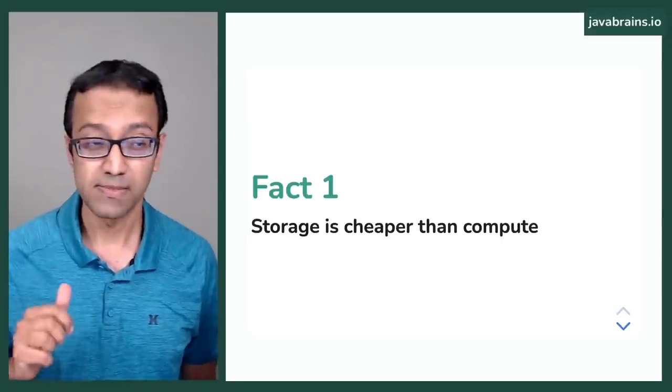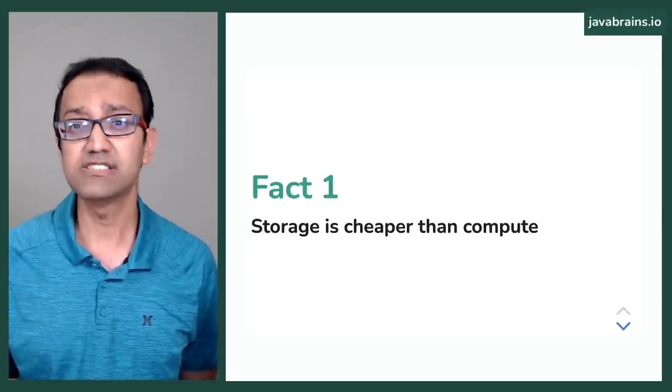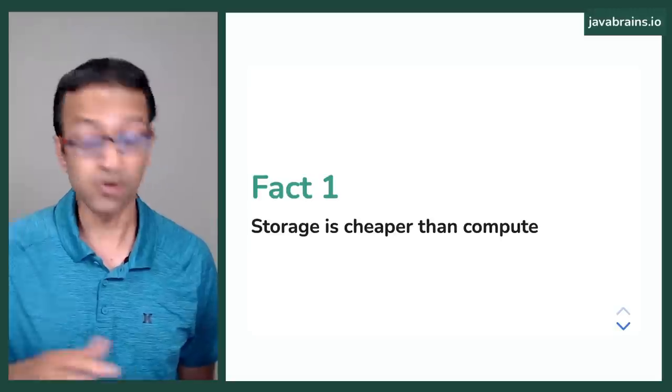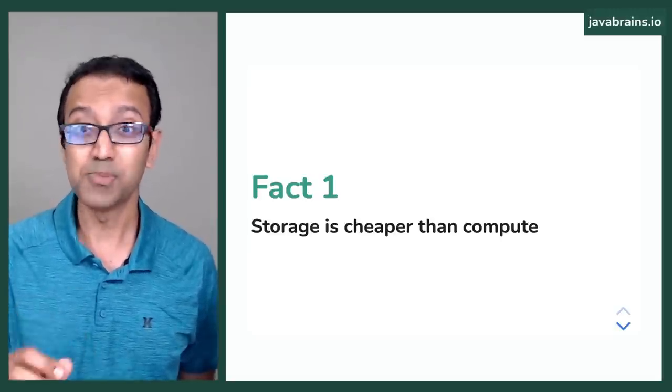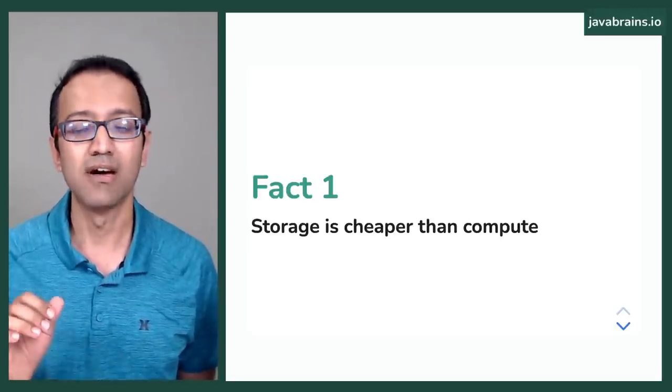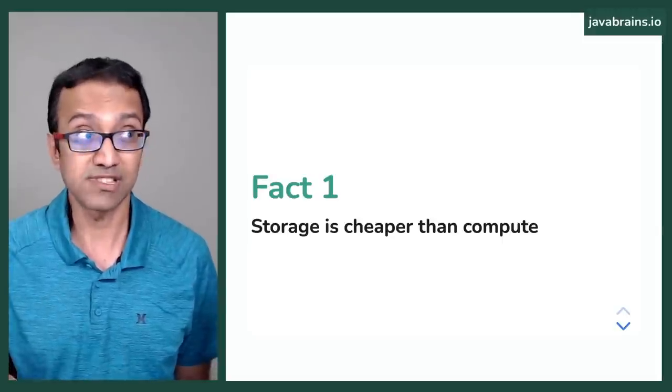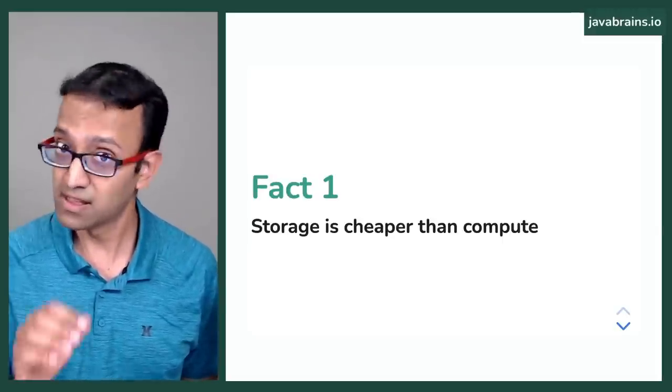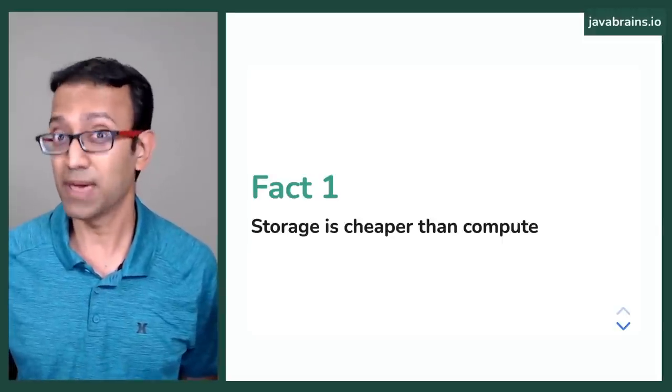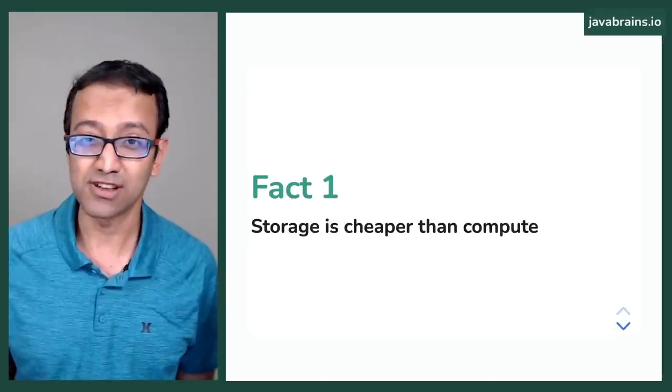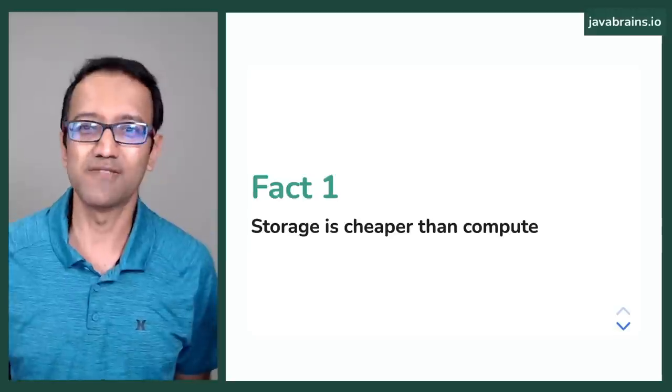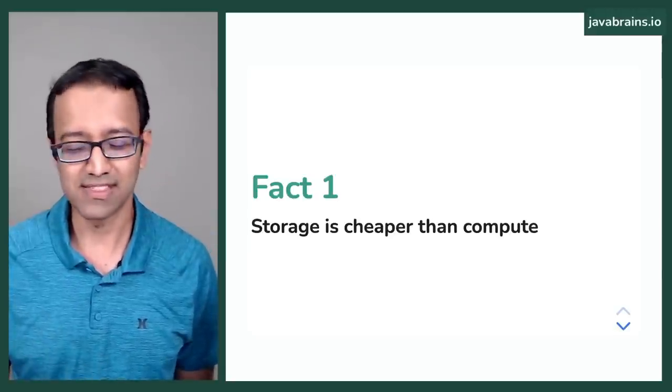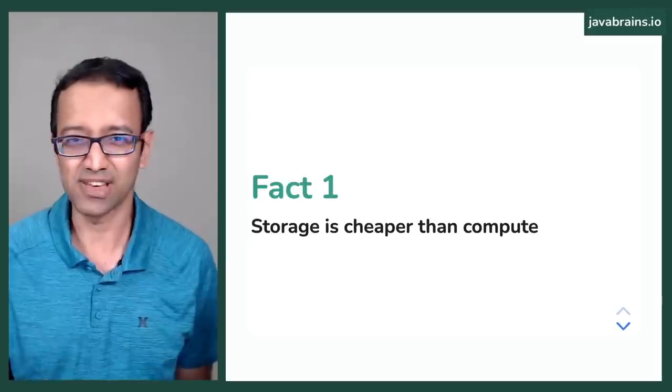Fact number one: storage is way cheaper than compute. Storing something on the cloud is cheaper than computing or processing something on the cloud. You want to host an HTML or CSS file, that's cheap. You want to host an API that does some calculation on the cloud, that's not cheap. It's just the way it's always been.